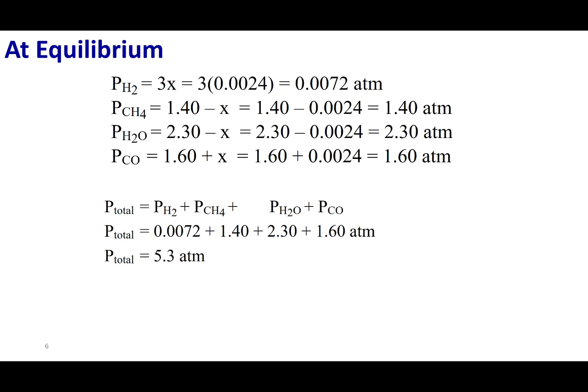To further drive home this point, let's evaluate things at equilibrium. H2 was 3x, so three times 0.0024 gets me this pressure of hydrogen at equilibrium. Let's take a look at how x is not significant. The concentration of methane, 1.4 minus 0.0024, if I use significant figures, this is still 1.4. The same is true for water, still 2.3, and carbon monoxide still 1.60. The final thing is we can add all these pressures up, and I get 5.3 as the total pressure at equilibrium.